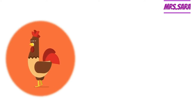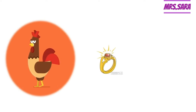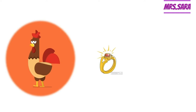Can you tell me — for the rooster, do we use a common balance or a sensitive balance? Common balance! Why? Because the rooster is a big mass. How about the ring? The ring is a small mass, so we will use a sensitive balance.